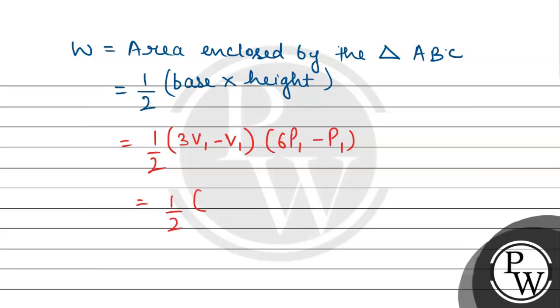So, now it will be half. 3V1 minus V1 will be 2V1. Multiply to this 6P1 minus P1. So, it will be 5P1. And this 2 will get cancelled. So, it will be 5P1V1.